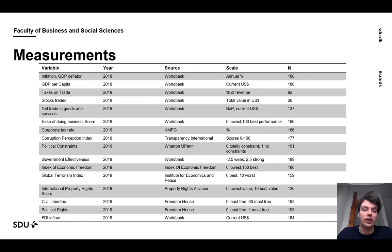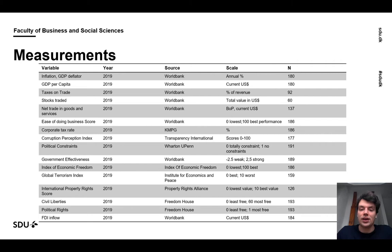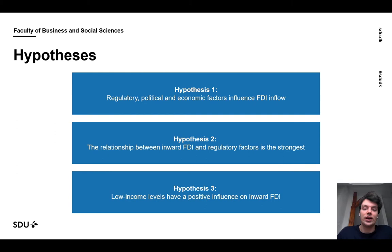regulatory and political variables from a variety of sources such as the World Bank, KPMG, Transparency International, Wharton School of Business from University of Pennsylvania, the Index of Economic Freedom, the Institute for Economics and Peace, the Property Rights Alliance and the Freedom House. There are some missing values for certain variables, especially for stocks traded. We are going to test three hypotheses: first, regulatory, political and economic factors influence FDI inflow; second, the relationship between inward FDI and regulatory factors is the strongest; and third, low income levels have a positive influence on inward FDI.